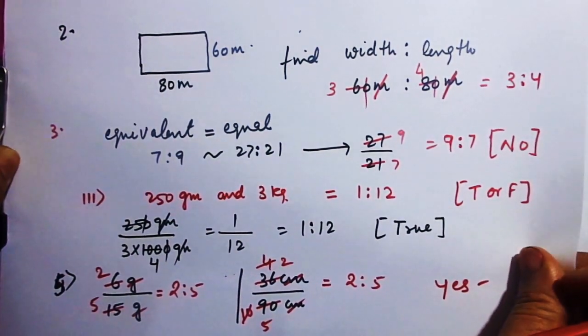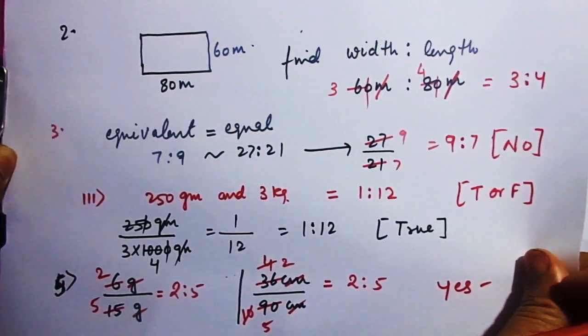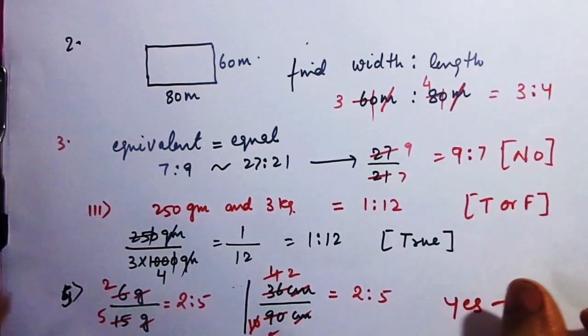Number 4: Is the ratio of 15 kg to 35 kg the same as 16 years to 14 years? Solve this yourself.